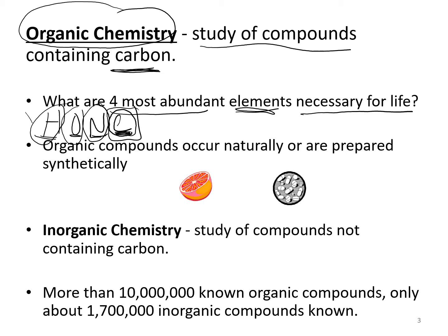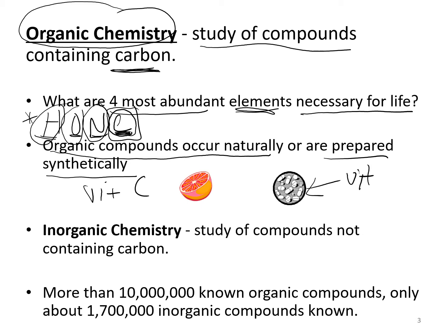Organic compounds can occur naturally or be prepared synthetically. For example, if we look at vitamin C extracted from an orange and compare its structure to vitamin C in a supplement, the actual chemical structure of both is exactly the same. Whether we get vitamin C naturally or buy it at the drugstore, the chemical structure is identical.